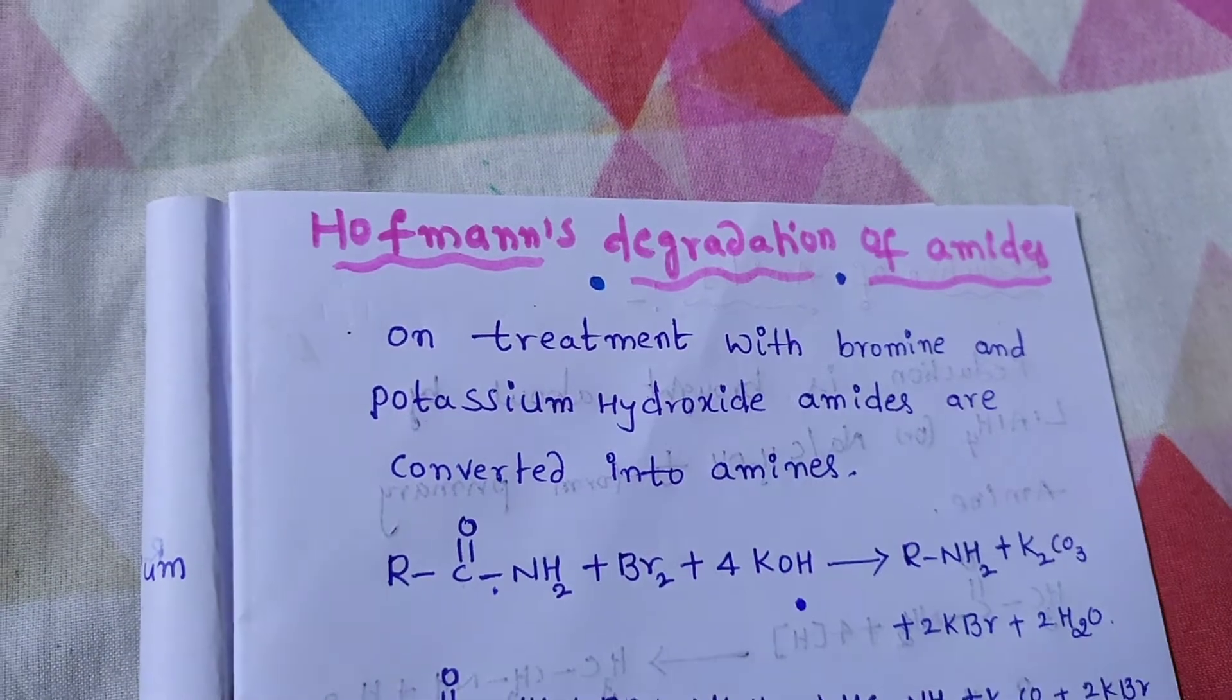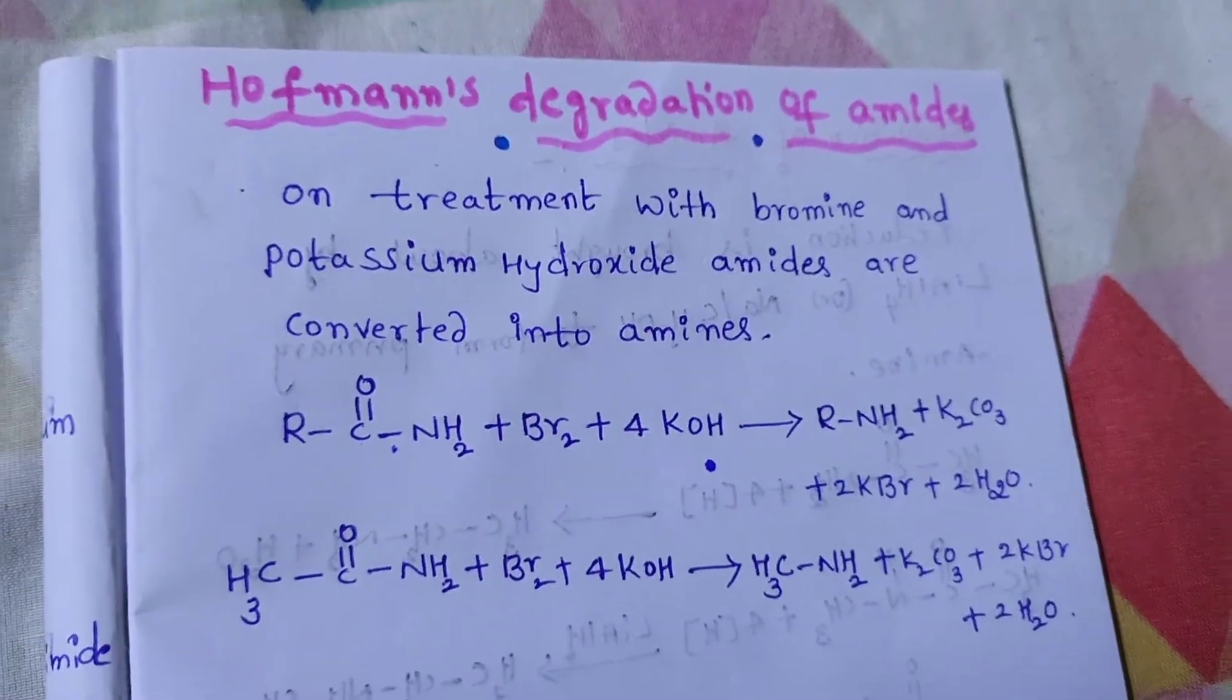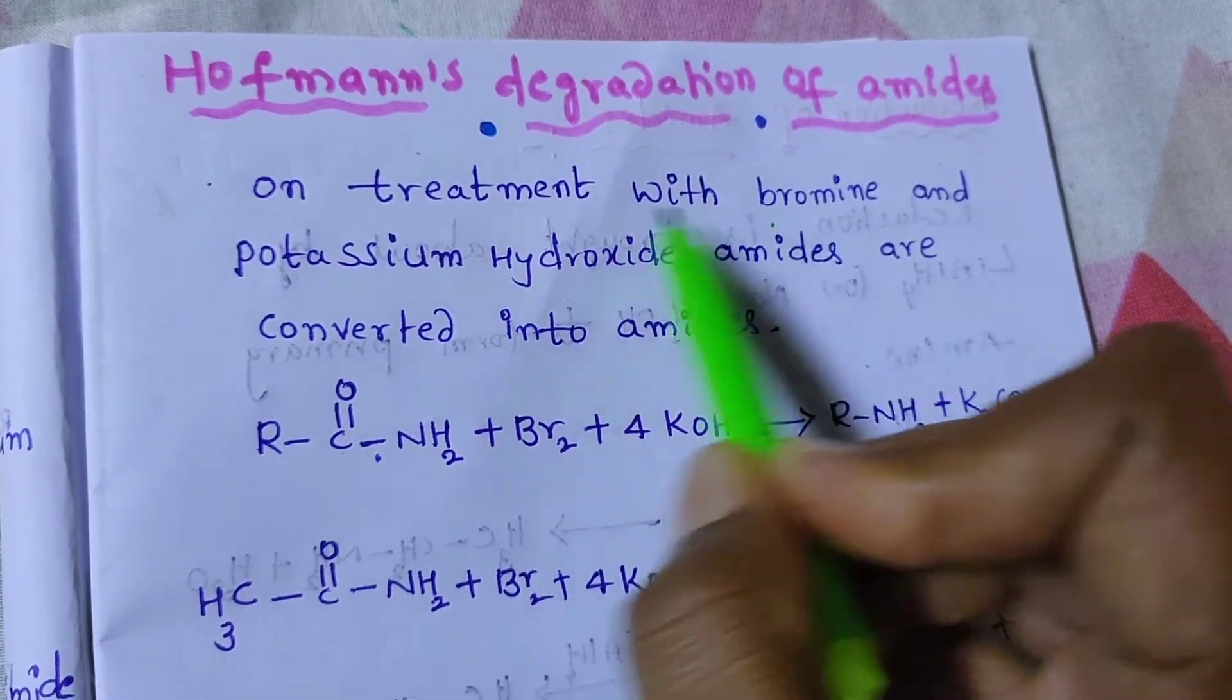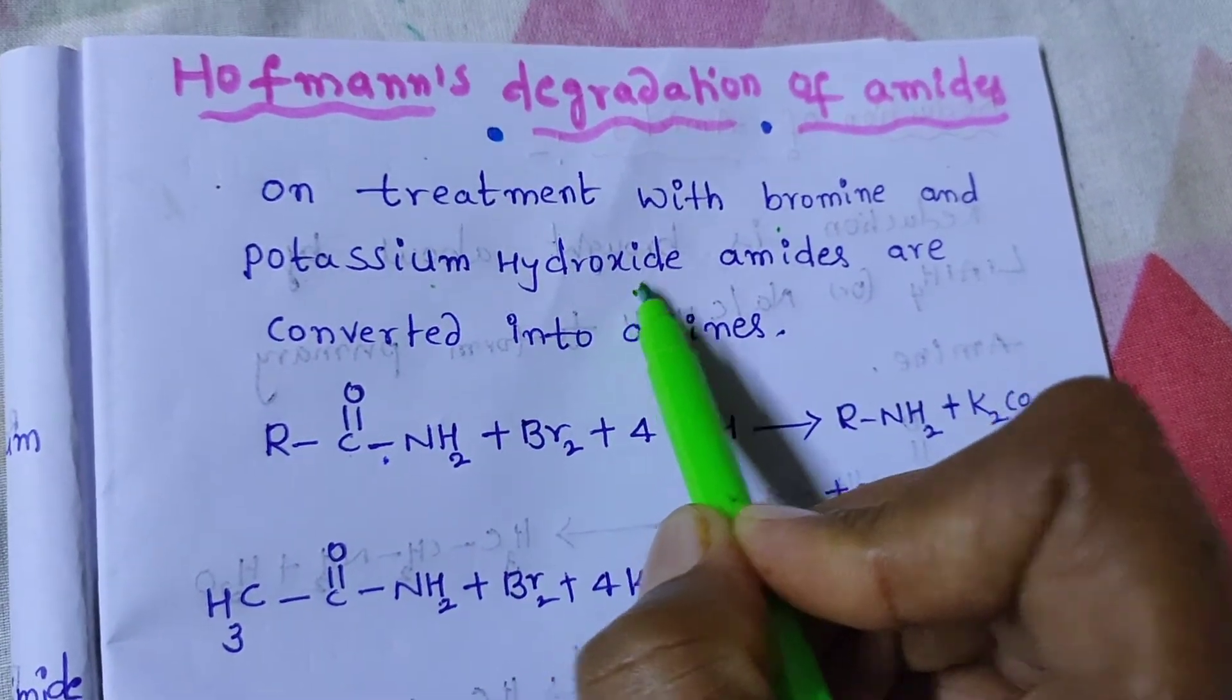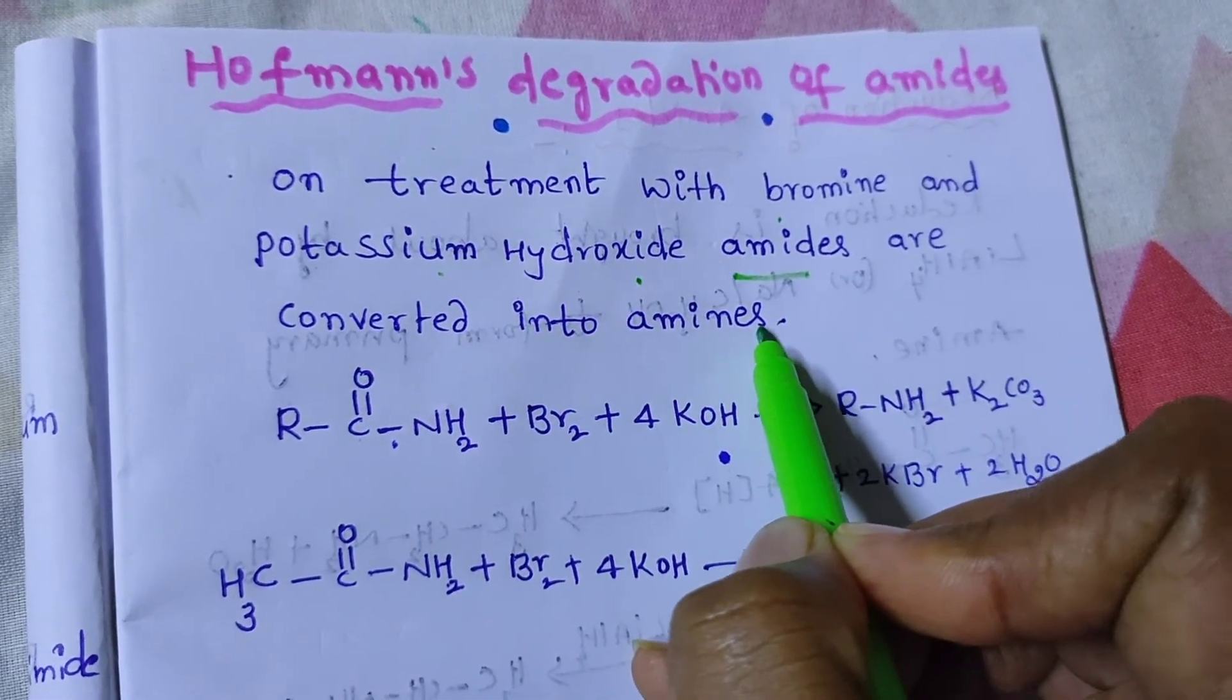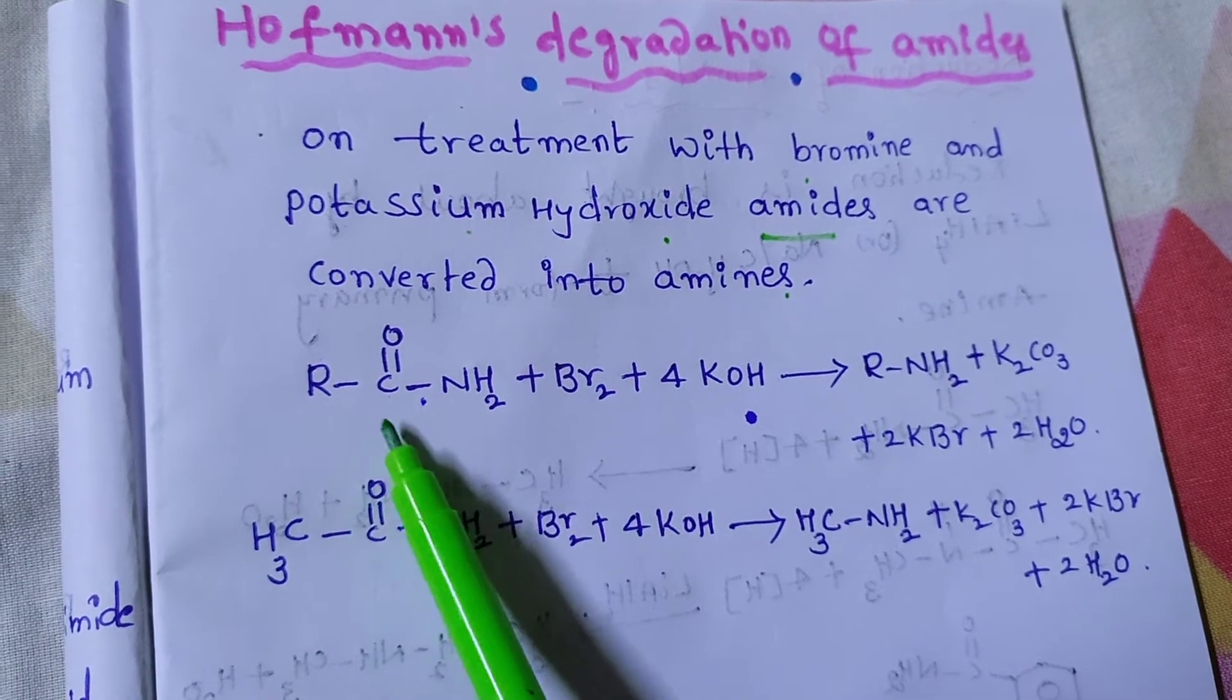On treatment with bromine and potassium hydroxide, amides are converted into amines. This is the general reaction.